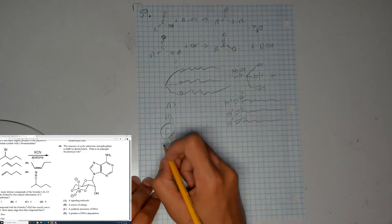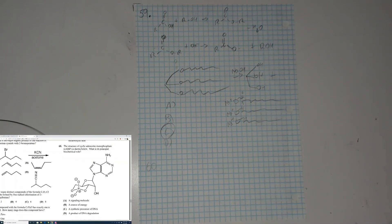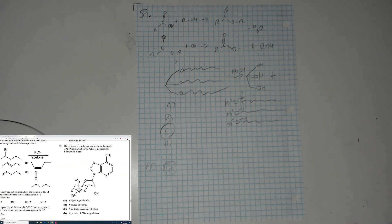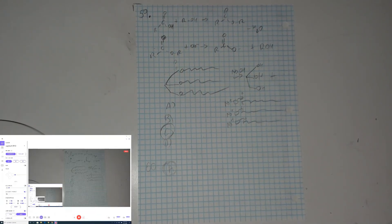Question 60 — I vaguely remember from AP Bio notes that this is a signaling molecule. You can eliminate some answers by looking at the molecular structure. I think you can cross out options like DNA degradation or synthetic precursor to DNA. I vaguely remember it's cAMP, so I'll go with A. You can use information from the structure to make your best guess. And that's it — 60 questions done!